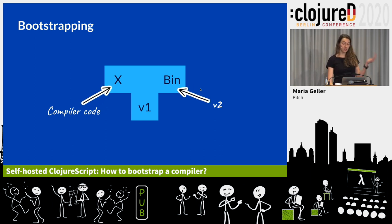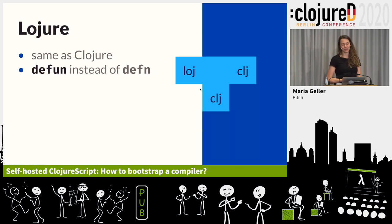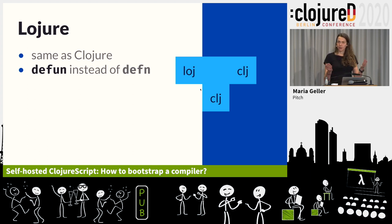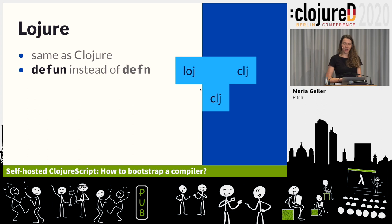Let's try to do this with our own small language, which I'm calling Lozier. It's a little bit more Lispy than Clojure — basically the same as Clojure, but instead of using defn to define a function, it uses defun, which is used in Common Lisp. For the first version, to bootstrap the compiler, my goal is to have it self-hosted. So I'm writing my first version for Lozier in Clojure, taking a Lozier file as input and compiling it to Clojure.